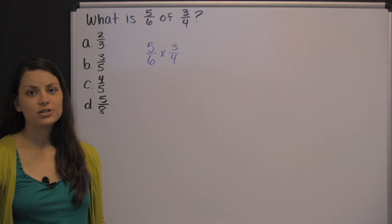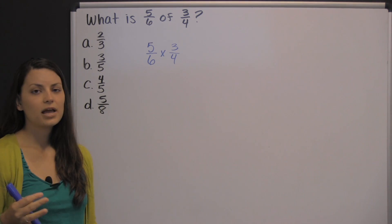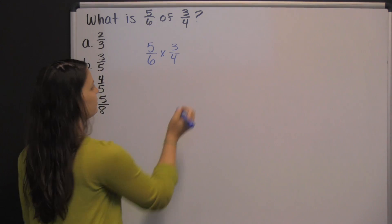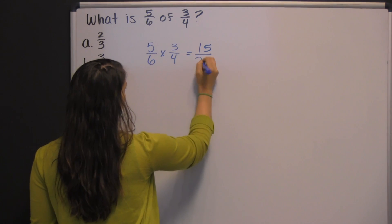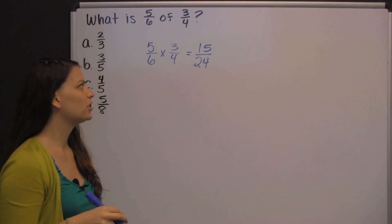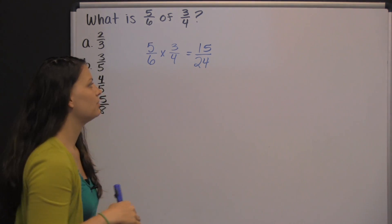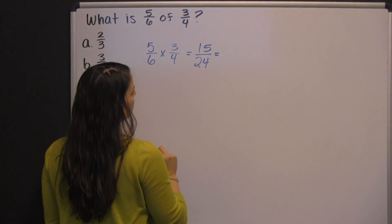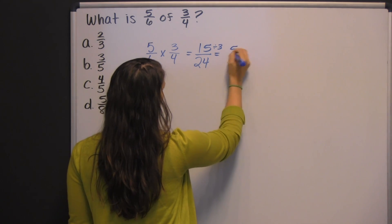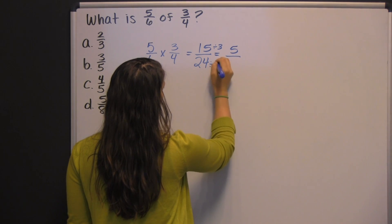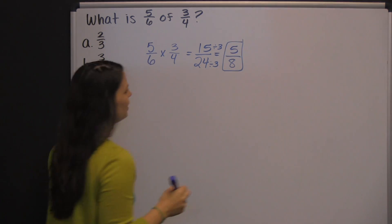So, we can rewrite this as five-sixths times three-fourths. There's more than one way to do this problem. The first way is simply to multiply straight across and then simplify your answer. Five times three is fifteen; six times four is twenty-four. Then simplify that fraction by dividing numerator and denominator by the same number. Both are divisible by three: fifteen divided by three is five, and twenty-four divided by three is eight.